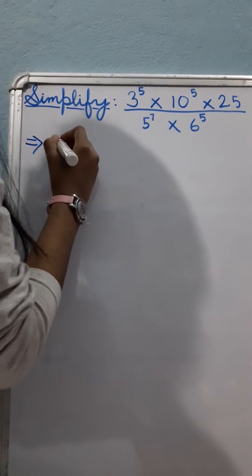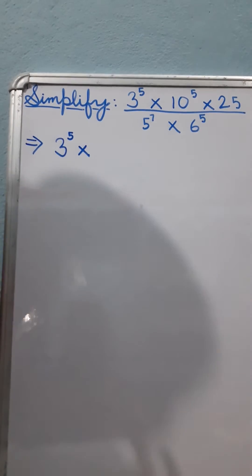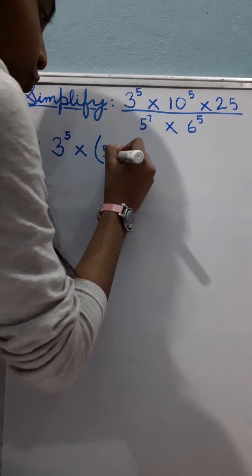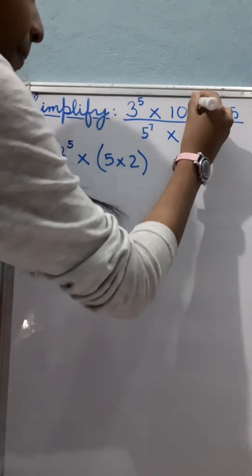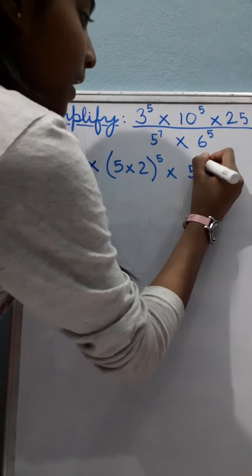So we will write here 3 raised to the power 5. Into two parts can be there. So we will write it 5 into 2, 10 to the power 5. 5 into 25 can be written as 5 to the power 2.